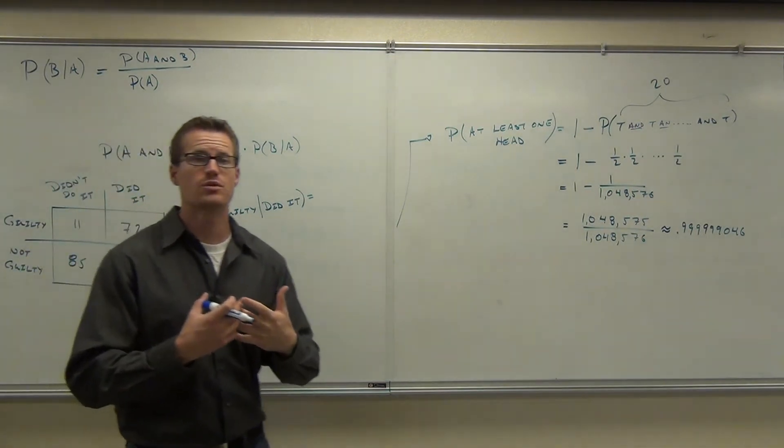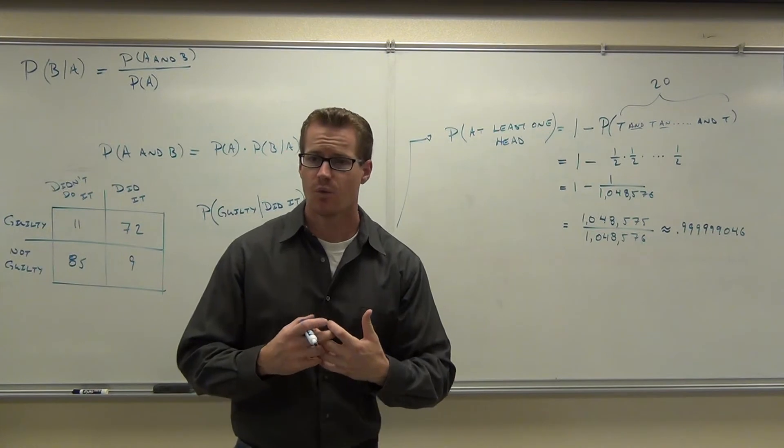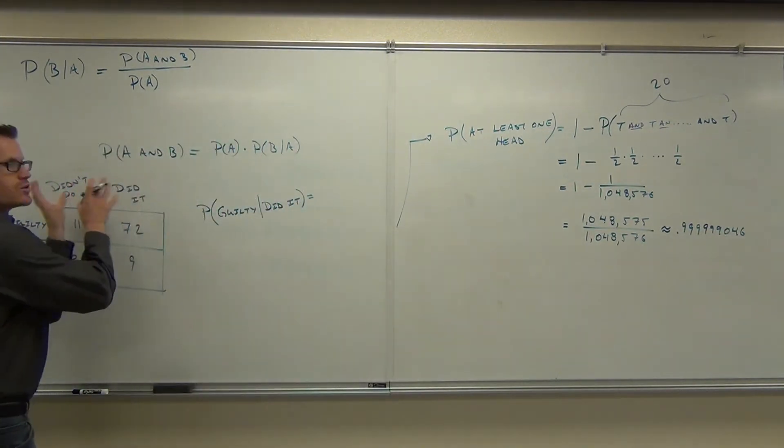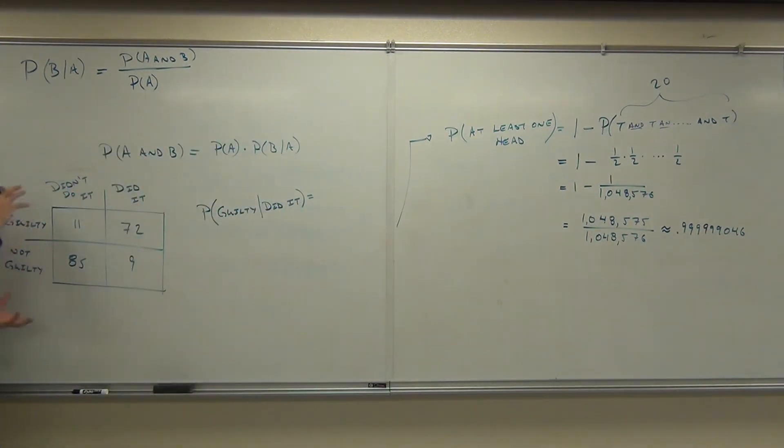Notice that this is a combination of two events. Do you guys see the two events? One event is whether they did it or not. The other event is whether they were found guilty or not. So this is a combination, a structuring of two events. You with me on this?